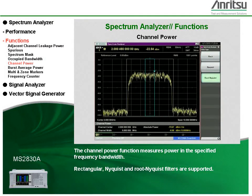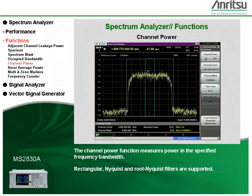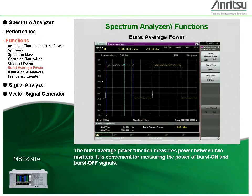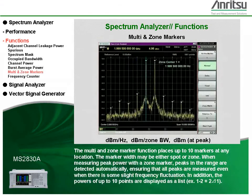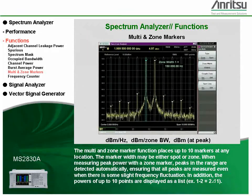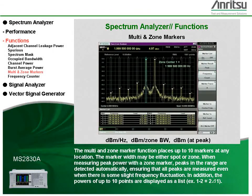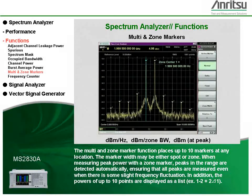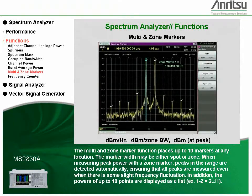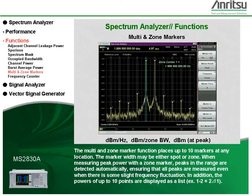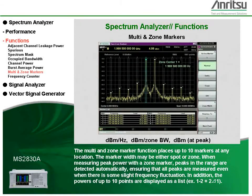Rectangular, Nyquist, and root Nyquist filters are supported. The burst average power function measures power between two markers, and is convenient for measuring the power of burst on and burst off signals. The multi and zone marker function places up to 10 markers at any location. The marker width may be either spot or zone. When measuring peak power with a zone marker, peaks in the range are detected automatically, ensuring that all peaks are measured even when there is some slight frequency fluctuation.